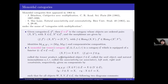The monoidal category is equipped with a distinguished object I called the unit object, and natural isomorphisms A, L, R — called respectively the associativity or associator constraint, the left unit constraint, and the right unit constraint — given on components in this way. The source of a component of A has the bracket on the first two tensorands, and the target has the bracket on the second and third tensorands.